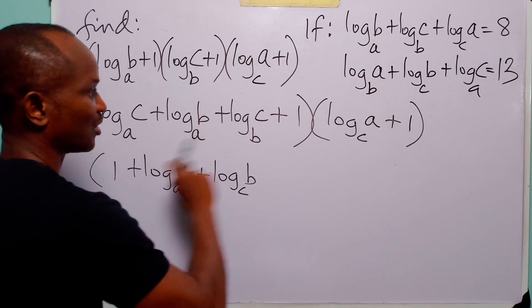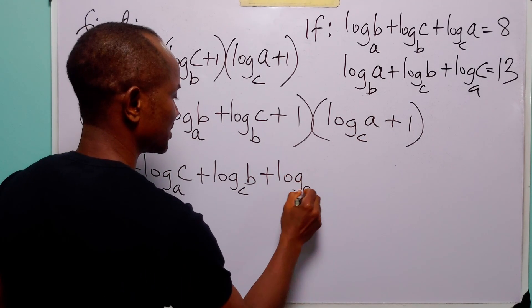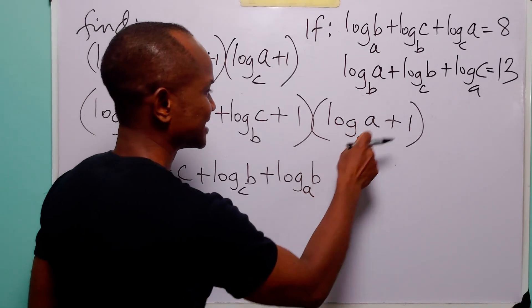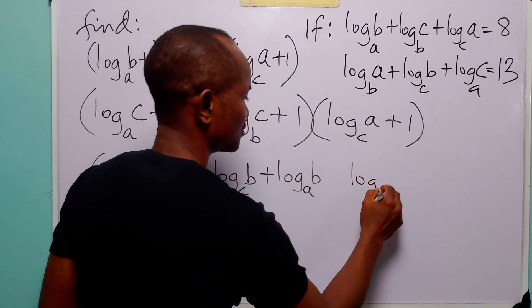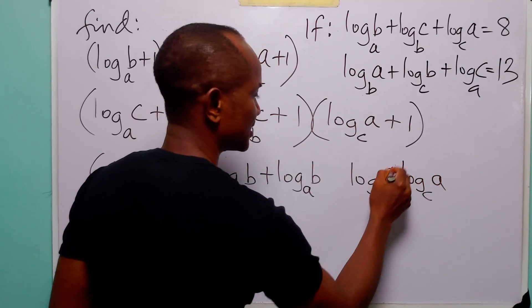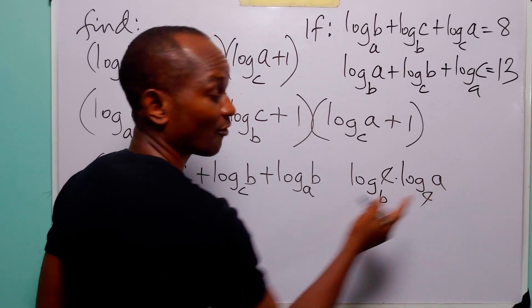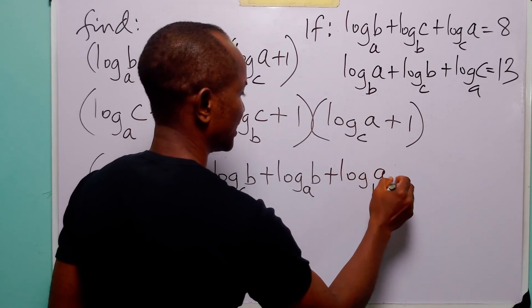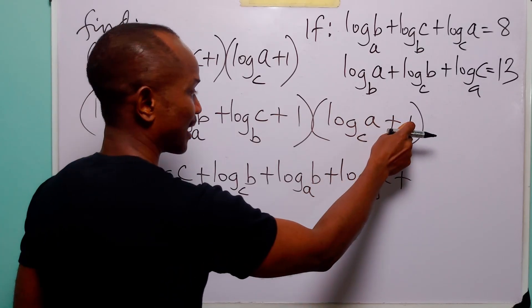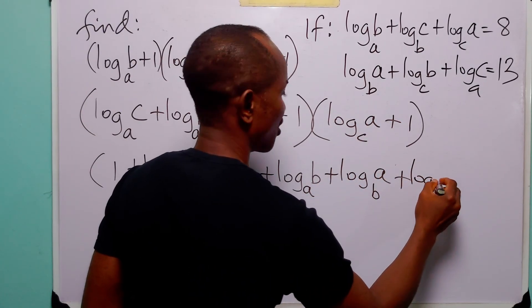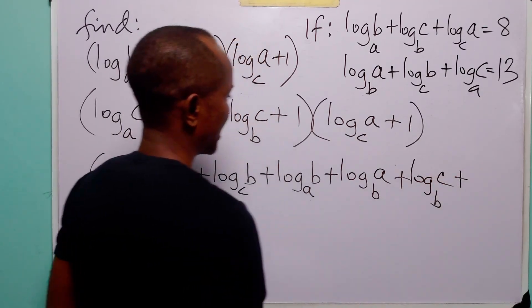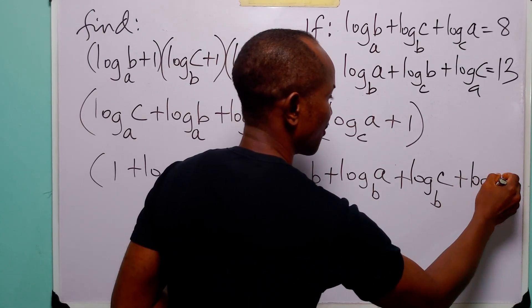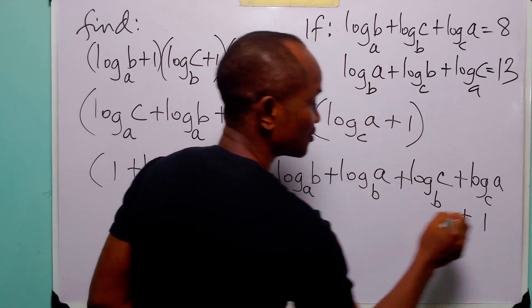Log to base a of b multiplied by 1 gives log to base a of b. Log to base b of c multiplied by log to base c of a — the intermediate base cancels — leaving log to base b of a. So we get log to base b of a plus log to base b of c. Finally, 1 times log to base c of a gives log to base c of a, and 1 times 1 equals 1.